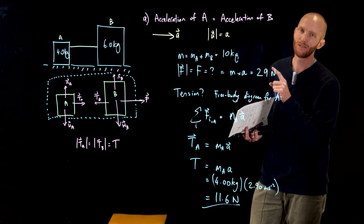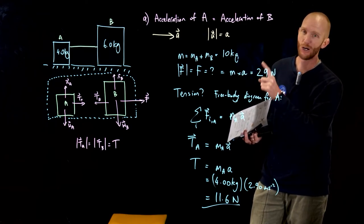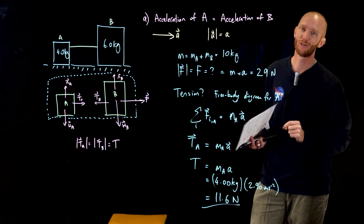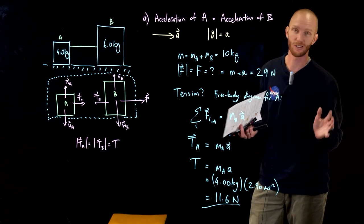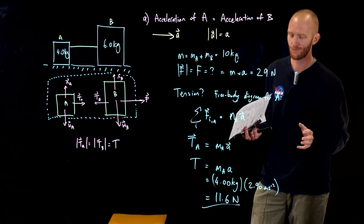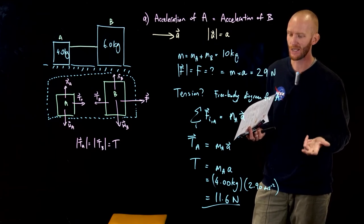We know that that force is pulling both boxes. We know that tension is only pulling one of the boxes so it should be a no-brainer from intuition that the tension is less than the applied force. We can also get some scale as well. We can get some idea about how big this force is.